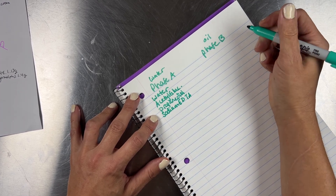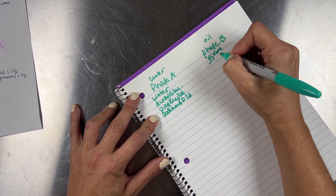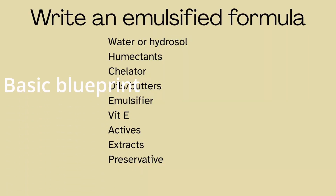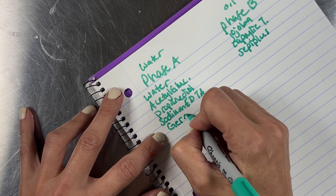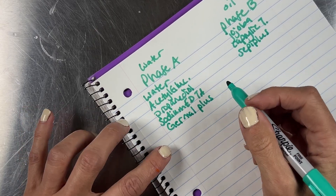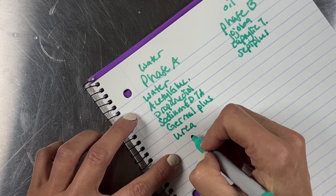I usually build on these three things, and the basic blueprint of a formula is this. See this chart I made? This is essentially what goes into every single cream, butter, or emulsified formula. Think of it as a pretty solid blueprint to build a formula. Each ingredient has its usage rates and requirements, which all play into the amounts that will be used.